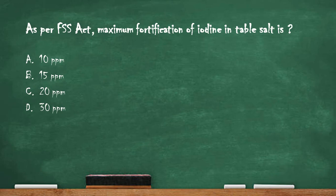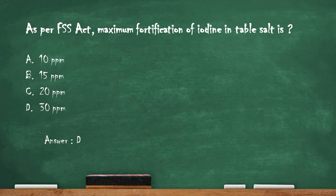Next question: as per the FSS Act, the maximum fortification of iodine in table salt is — option A: 10 ppm. Option B: 15 ppm. Option C: 20 ppm. Option D: 30 ppm. The right answer is option D — 30 ppm. The level of iodine fortification in salt ranges from 30 to 200 ppm, which provides enough iodine to meet the requirement of 150 to 200 mg per person per day. Subscribe to my channel for more updates and don't forget to like. Thank you.